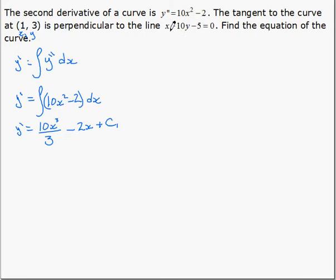So, to find the slope of this line, we can simply take the derivative. Remember, the derivative is slope. So, if we take the derivative of x minus 10y minus 5 equals 0, the derivative is 1 minus 10y prime minus 0 equals 0, and solving for y prime gives us 1 over 10.